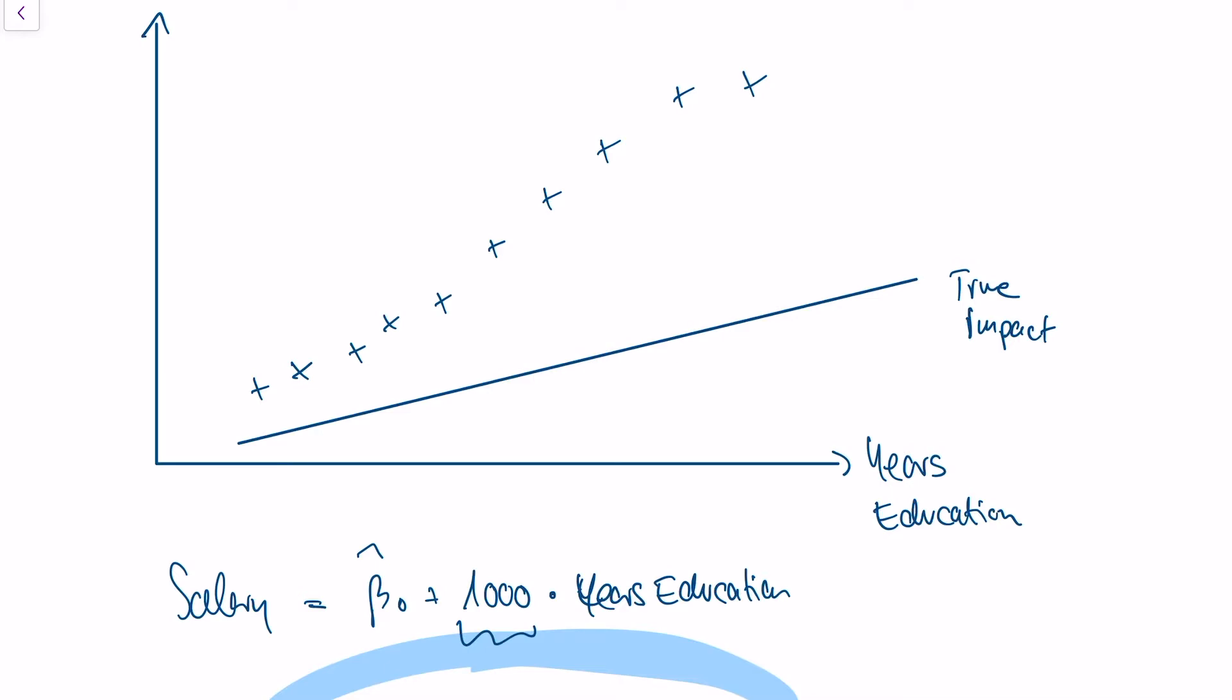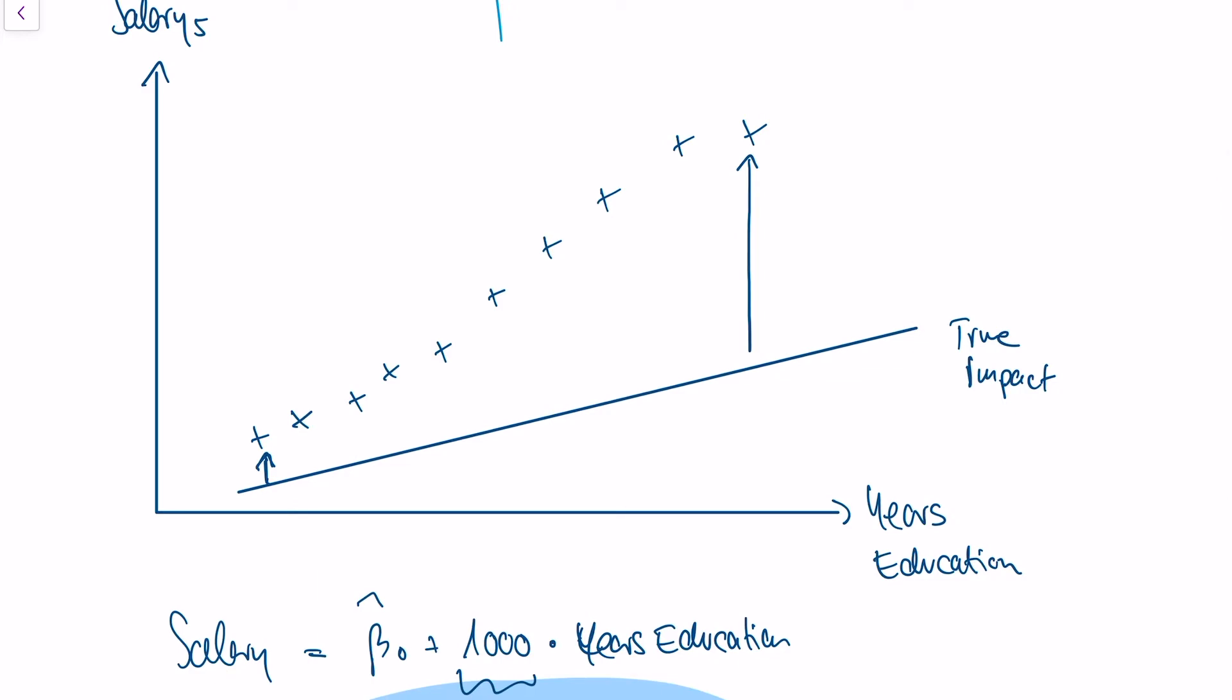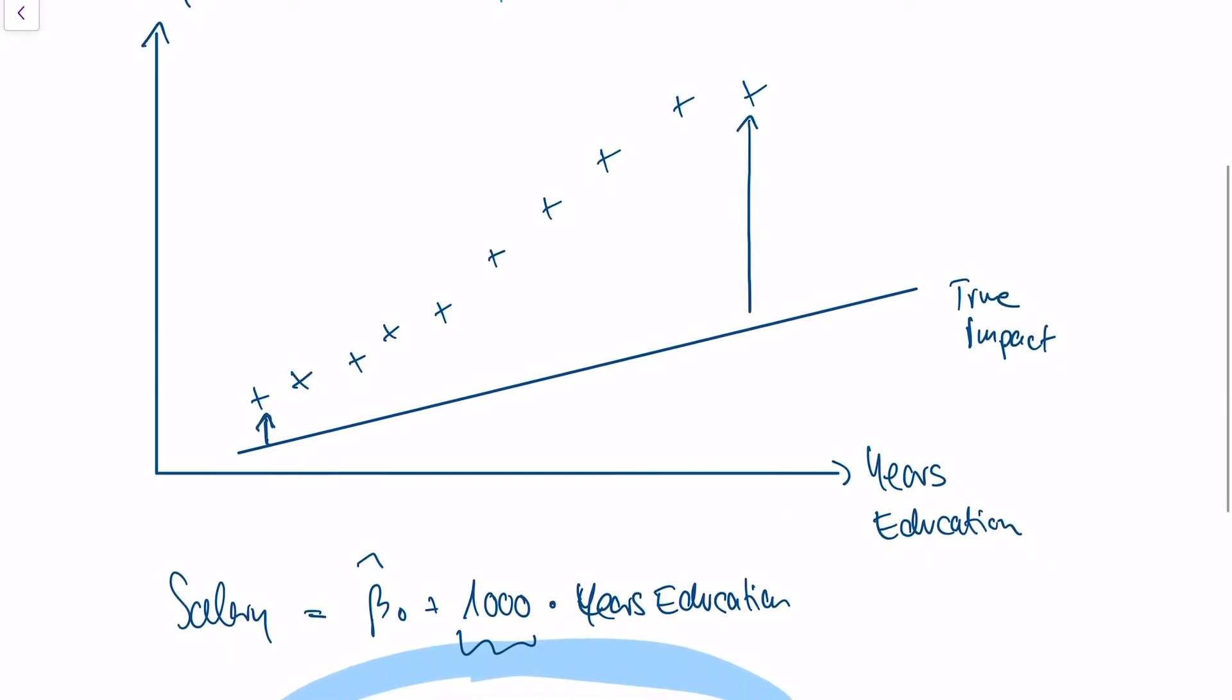Why would our assumption on unbiasedness be violated in this case? Let's see. So for small years of education, or small xi, our deviation from the true impact is small. For large years of education, our deviation is large. In other words, if the true impact of years of education on salary would be this line, then we would have a positive correlation. Because with larger x, with larger years of education, our error terms grow larger.